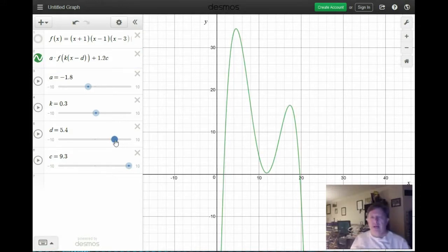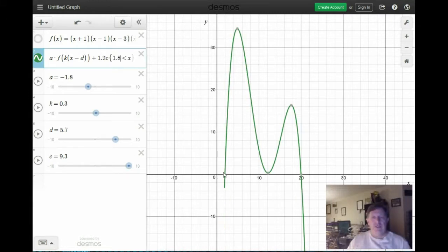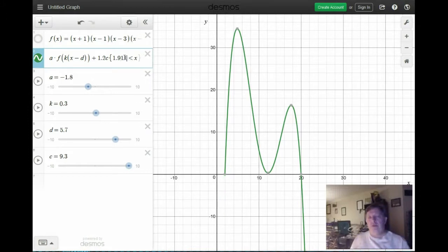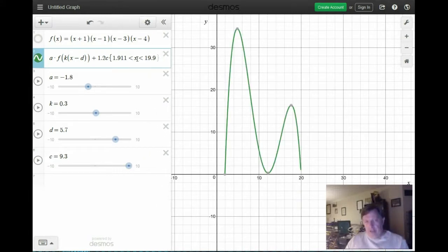Maybe we can modify d a little bit more. Okay. And now let's put in a domain restriction. 1.911. And the other number is over here, 19.966. So we want this to be less than 19.966.